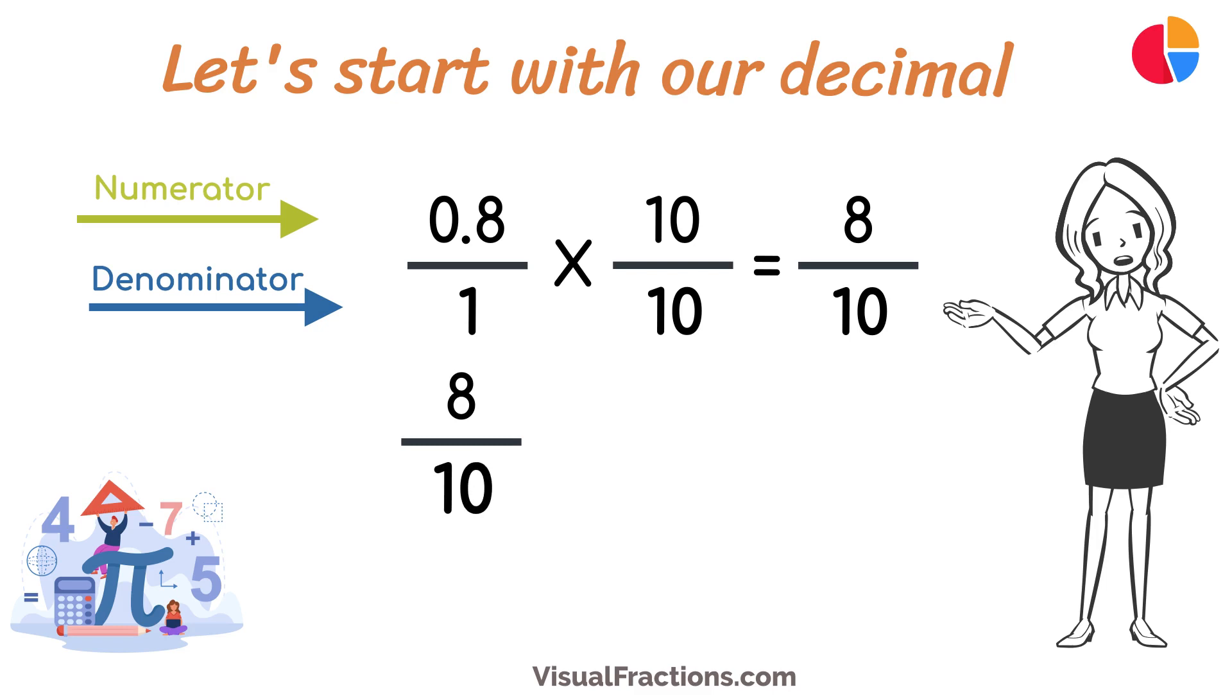Next, we simplify. Both the numerator and the denominator in 8 tenths are divisible by 2, the greatest common divisor. Divide 8 by 2 to get 4 and divide 10 by 2 to get 5. So, 8 tenths simplifies neatly to 4 fifths.